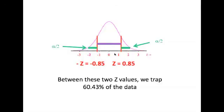We know that it is perfectly symmetrical around the mean, mu, or 0. So we have Z equals negative 0.85 and Z equals 0.85. So between these two values, we capture 60.43% of the data. Man, that took a little work, but more practice, practice and practice, and you'll get there.